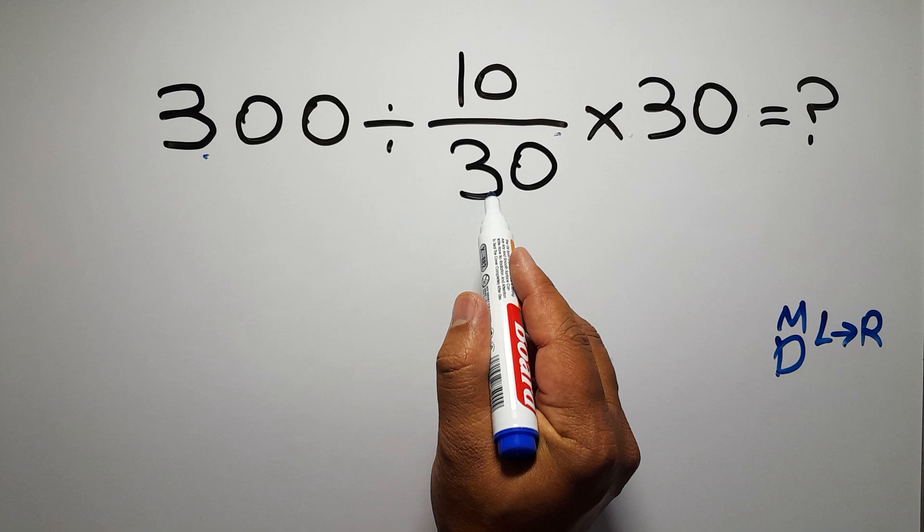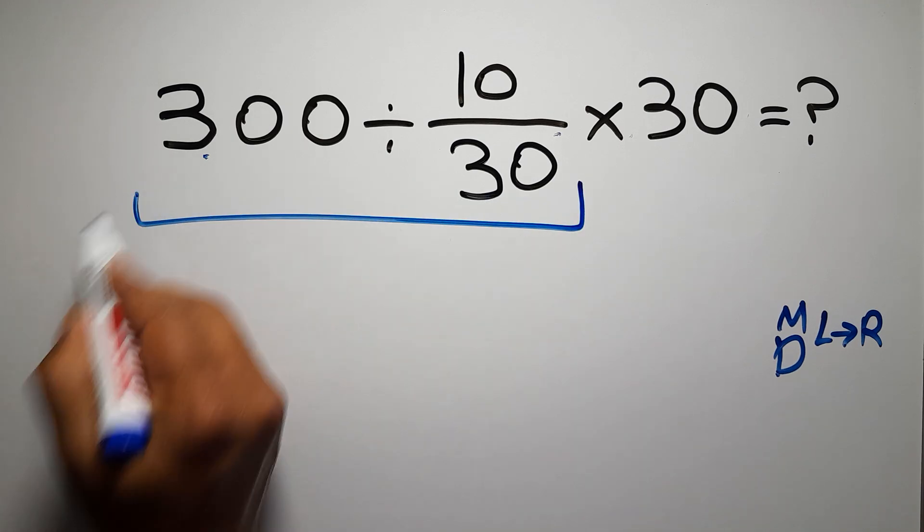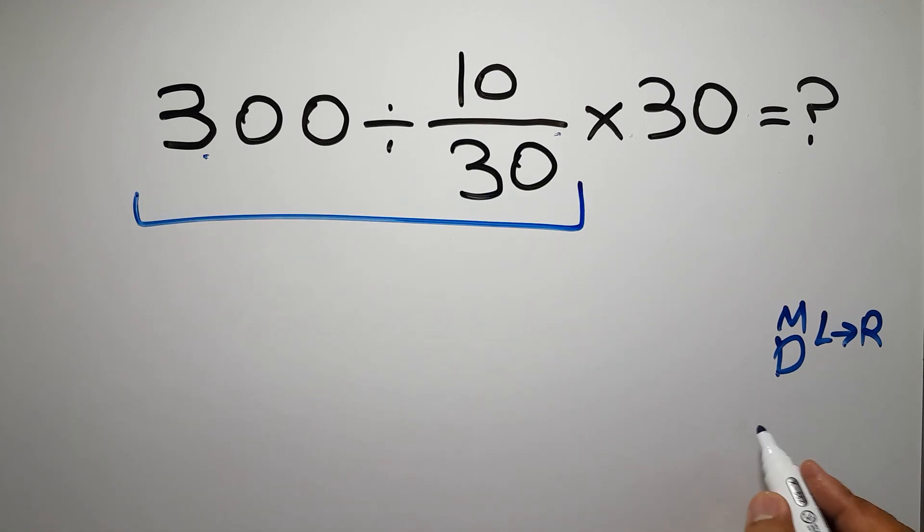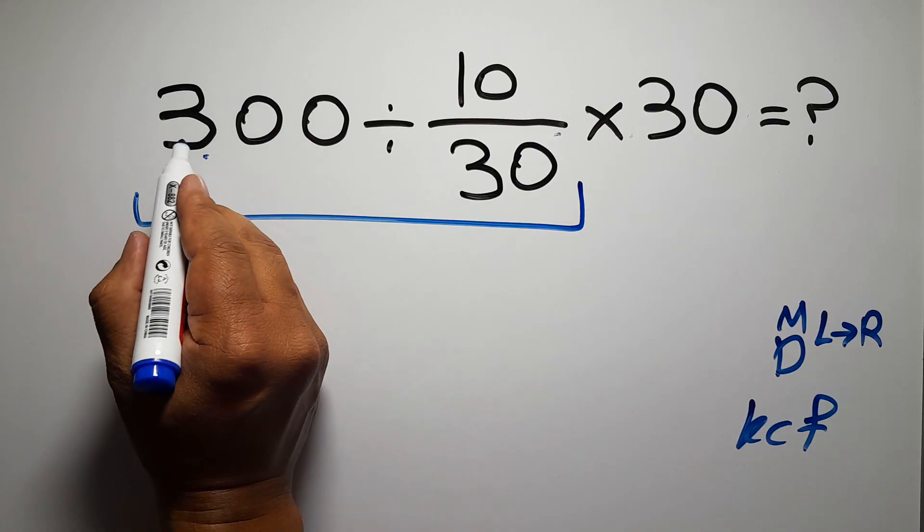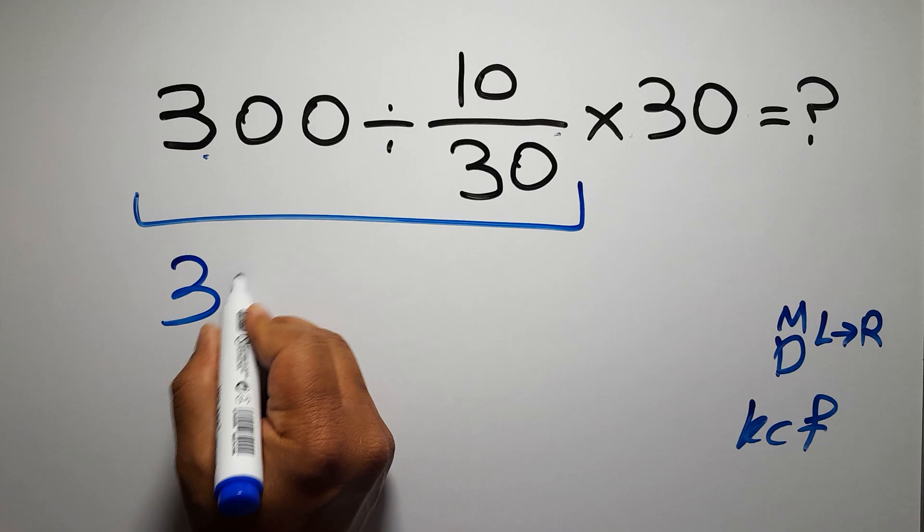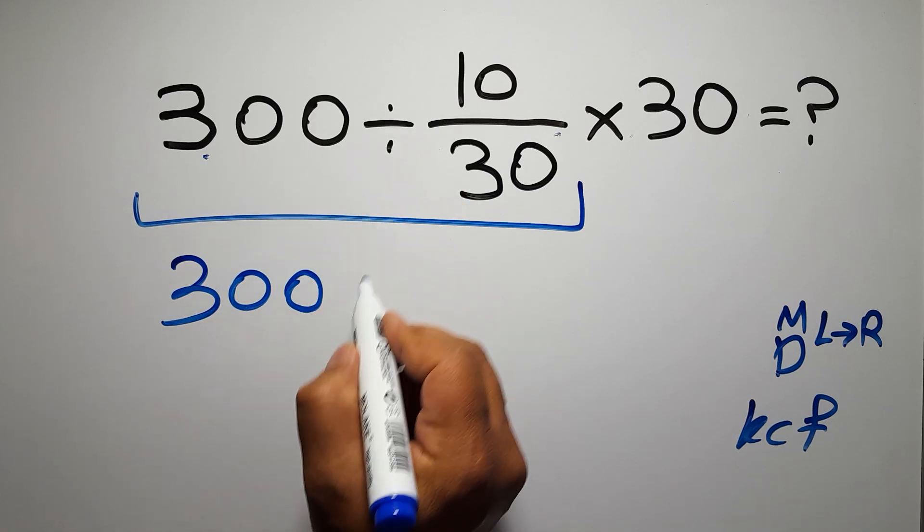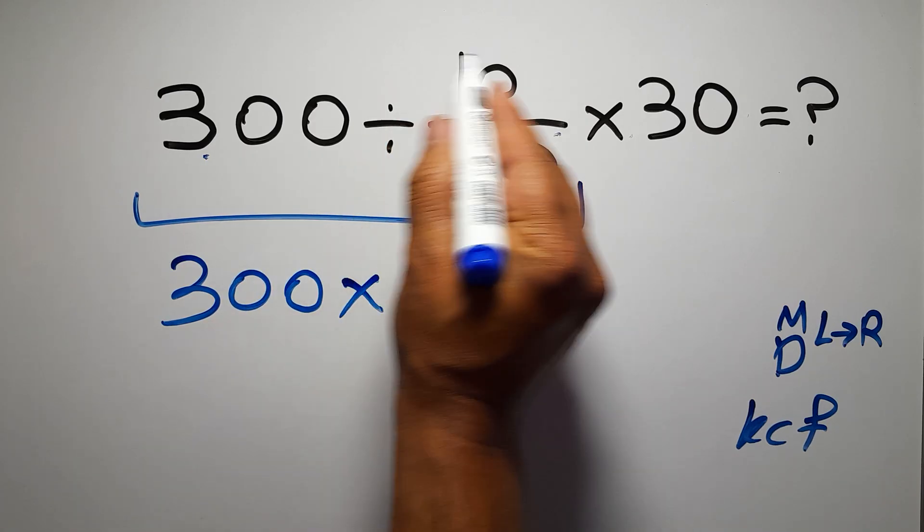300 divided by 10 over 30. According to the KCF rule, K stands for keep, C stands for change, and F stands for flip. We can write: keep the first fraction, change division to multiplication, and flip the second fraction.